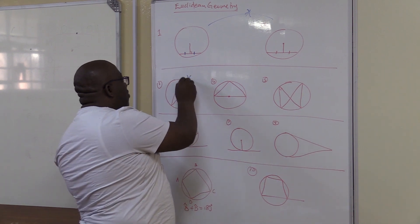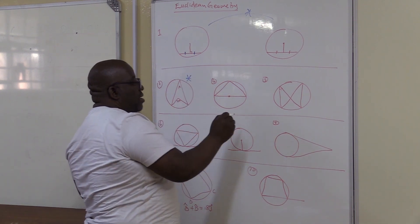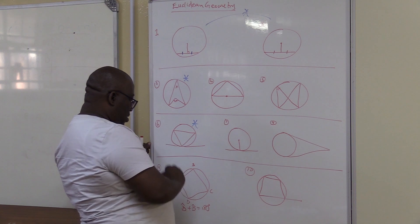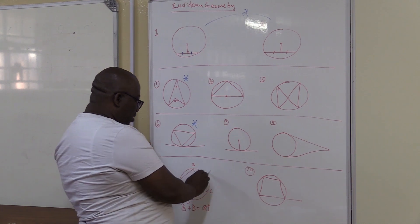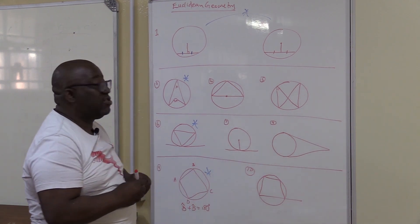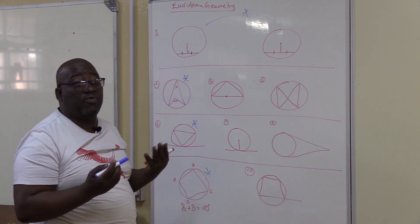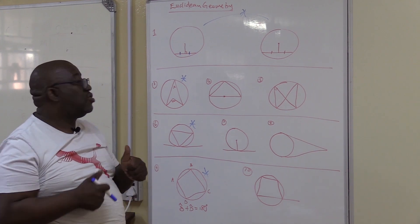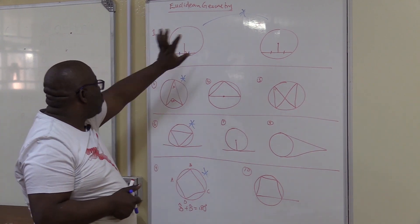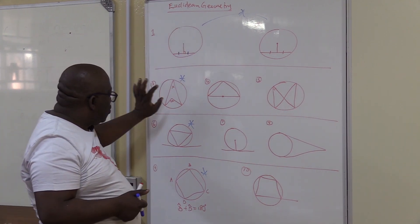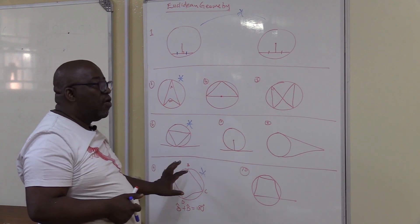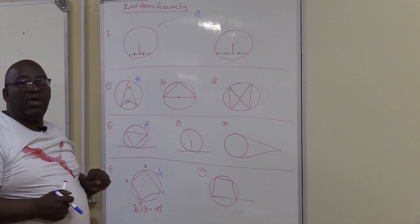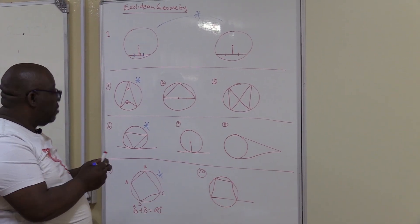This theorem you need to prove in the exam, and this one is also a proven theorem. Those that I put stars on — you must know they are proofs because it is required in the exam. There are about six proofs in total: one, two, three, four, and the last two in the Grade 12 theorems. So there are six in all.